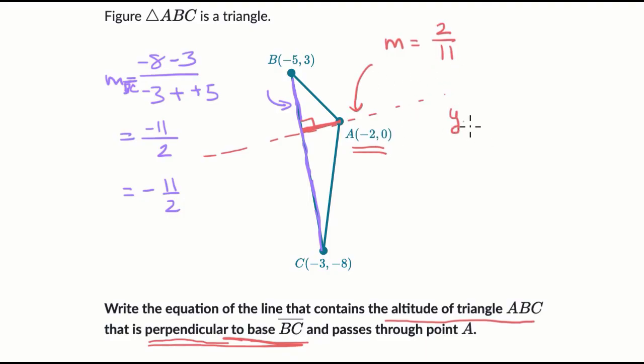Point-slope form is y minus y one is going to be equal to our slope times x minus x one. And y one and x one are these coordinates, x and y coordinates. So when x is equal to negative two, when x is negative two, y is equal to zero. So this one just goes away.